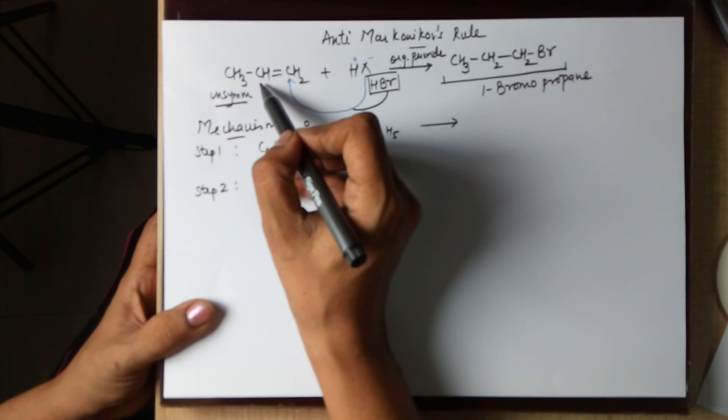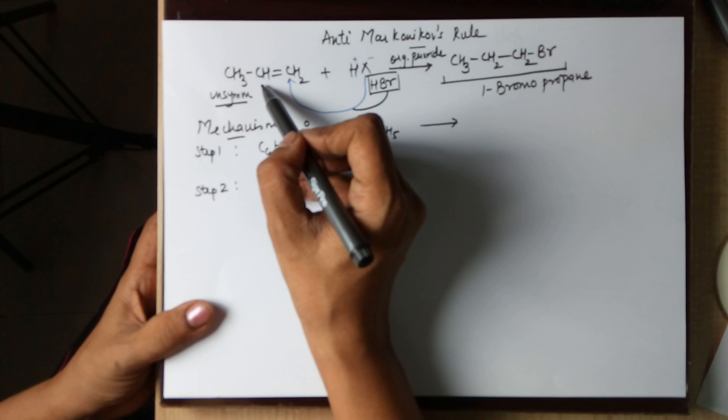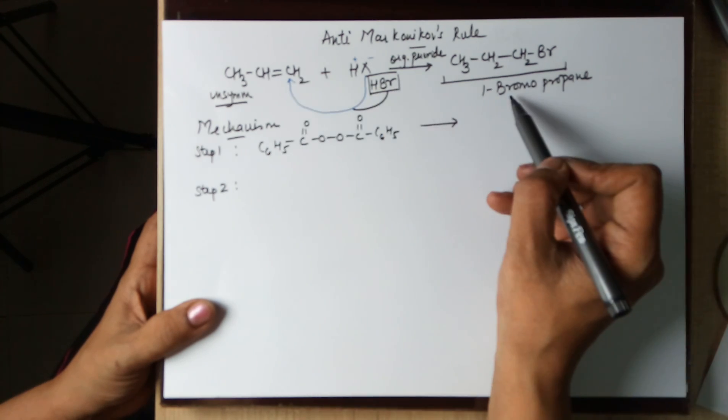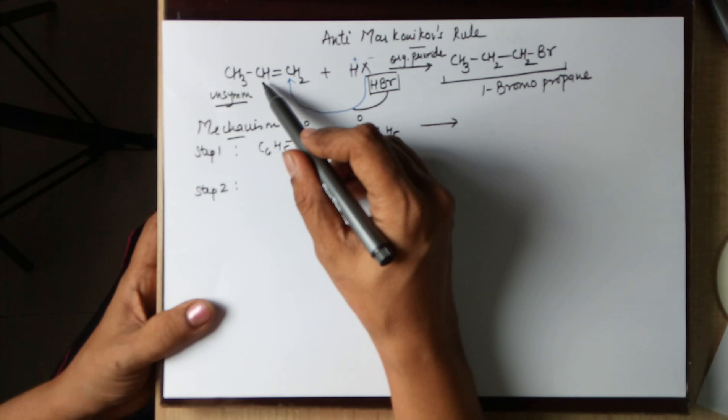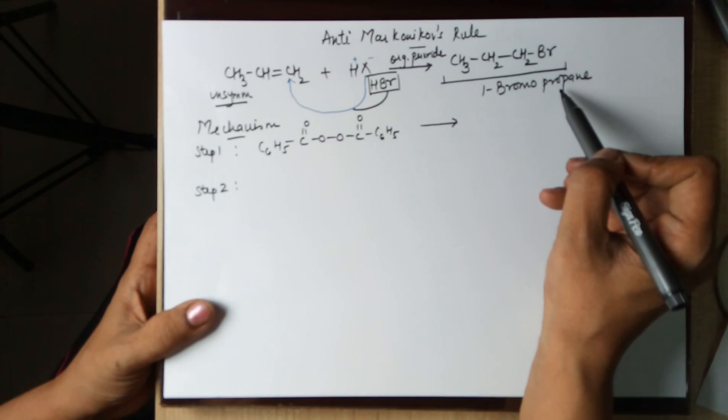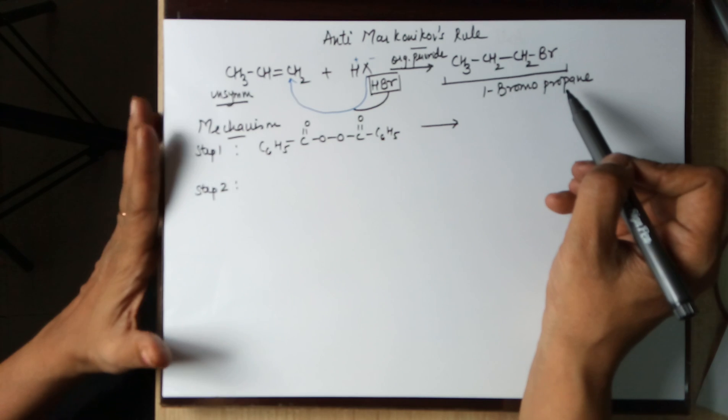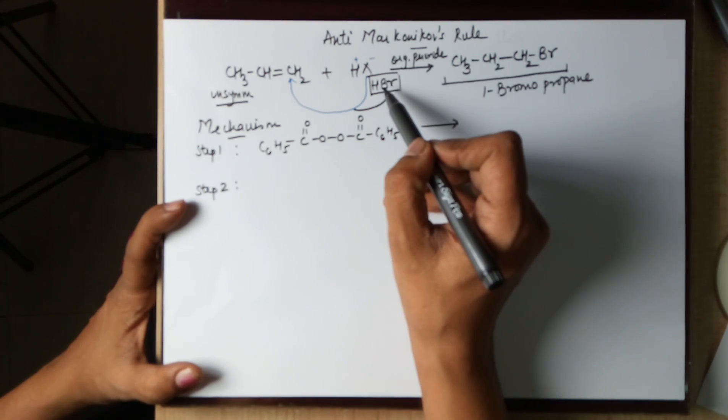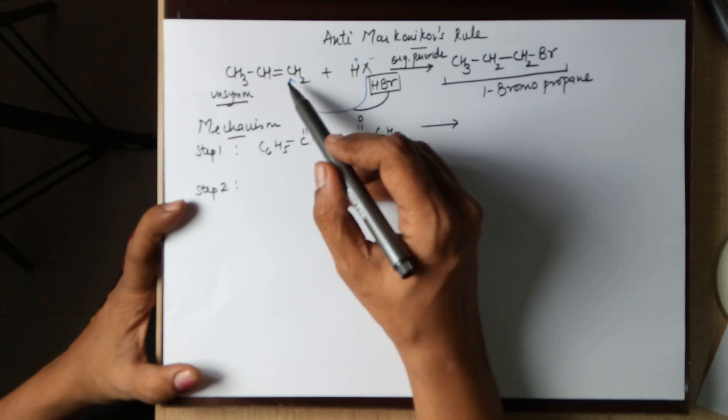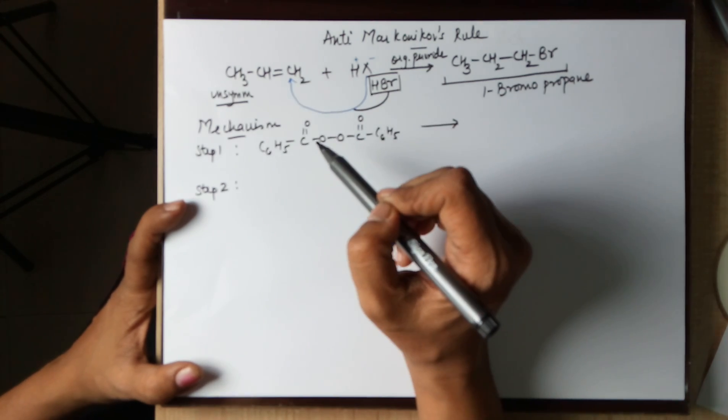Hence in that case it would have moved on to the central carbon and the product would have been a 2-bromopropane. In this case your Br would have gone to the second carbon and it would have been a 2-bromopropane. Now since we are doing an anti-Markovnikov's rule, the negative part which is Br only, this Br- goes to the double bonded carbon having more number of hydrogens.